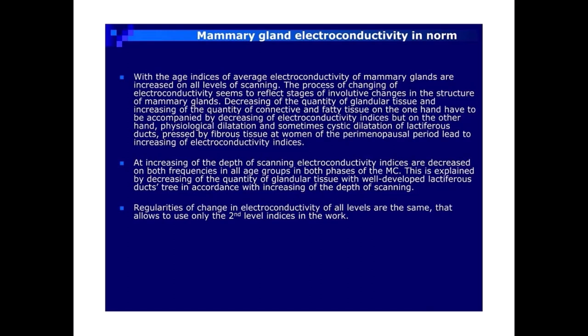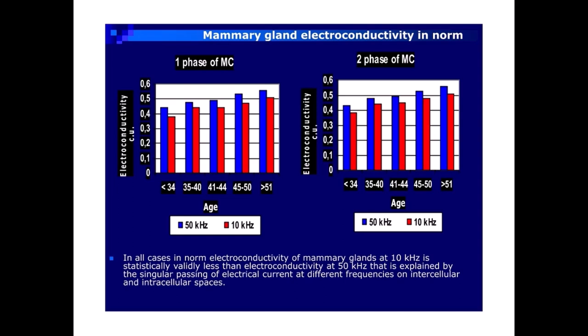Regularities of change in electroconductivity at all levels are the same, which allows use of only the second level indices in the work. In all cases in norm, electroconductivity of mammary glands at 10 kHz is statistically significantly less than electroconductivity at 50 kHz. This is explained by the singular passing of electrical current at different frequencies on intercellular and intracellular spaces.